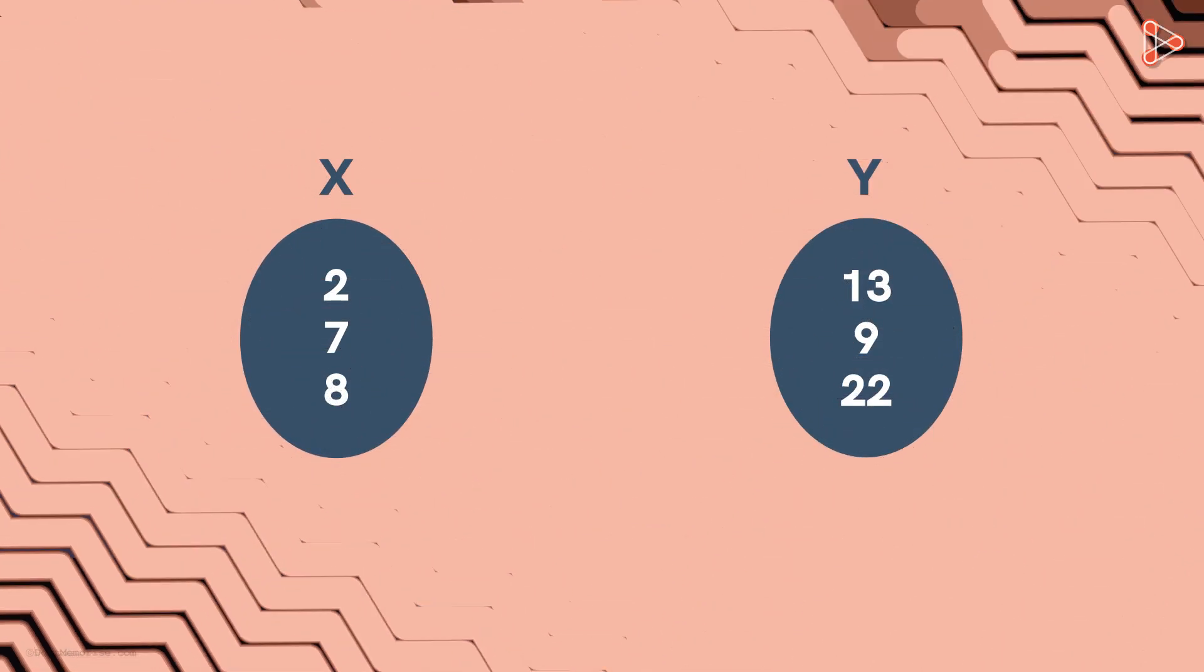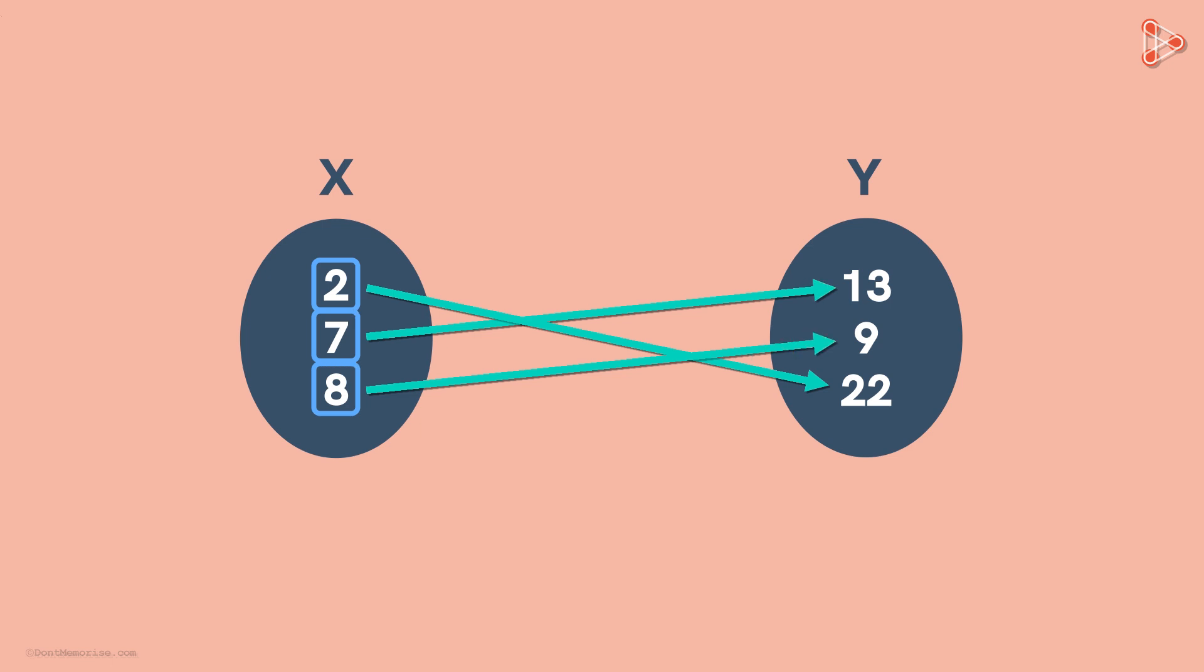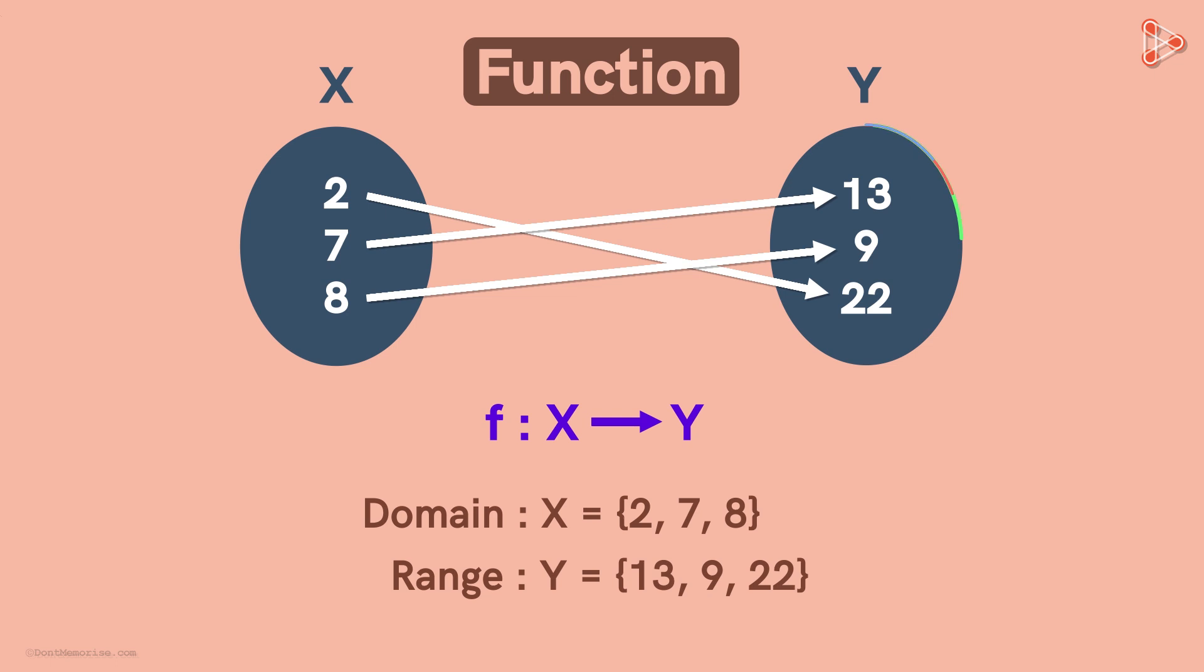Now let's say we have sets X and Y, both of numbers. And we are given this relation between the two sets. We can see that related to each number in the X set, there is only one number in the Y set. So this relation is a function. It can be written like this. The domain of the function is the numbers in the set X. And the range of the function is the numbers in the set Y.